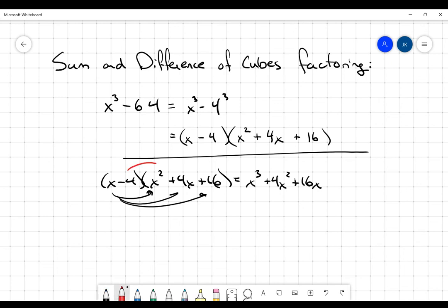Then I'm going to distribute the negative 4 to the three terms there. So it'll be negative 4x squared, negative 16x, and then minus 64. And then you can probably see it happening right there. That 4x squared minus the 4x squared. The 16x minus the 16x. And then we are left with x cubed minus 64.